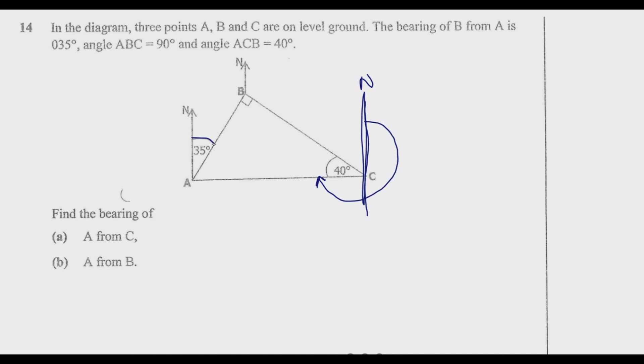So if this angle is 35 degrees, for us to be able to find the bearing of A from C, we need to know this angle. So that we take 40 plus this angle, which we shall call x, from 360, which is a complete circle.